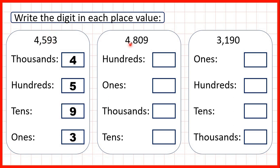Now, we have 4,809. The hundreds digit is the third digit from the right, so that's an eight. The ones digit is on the end, so that's nine. The thousands is a four. And the tens is a zero.